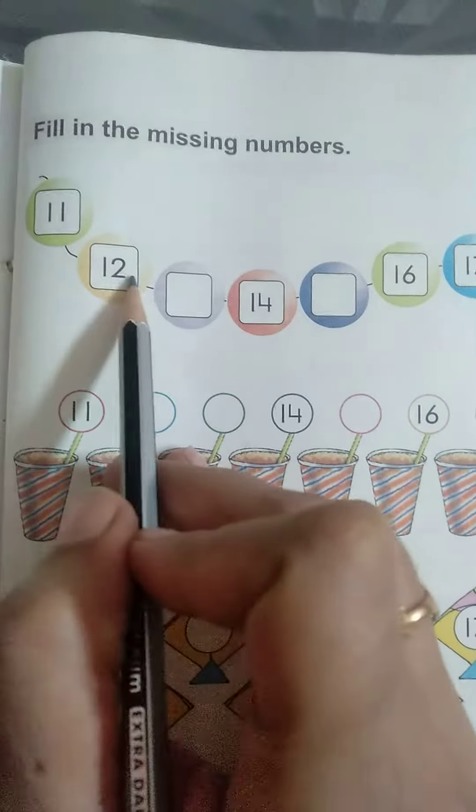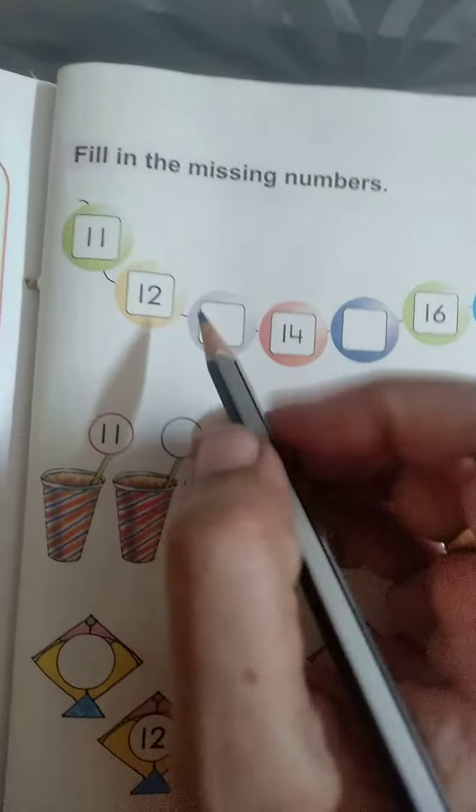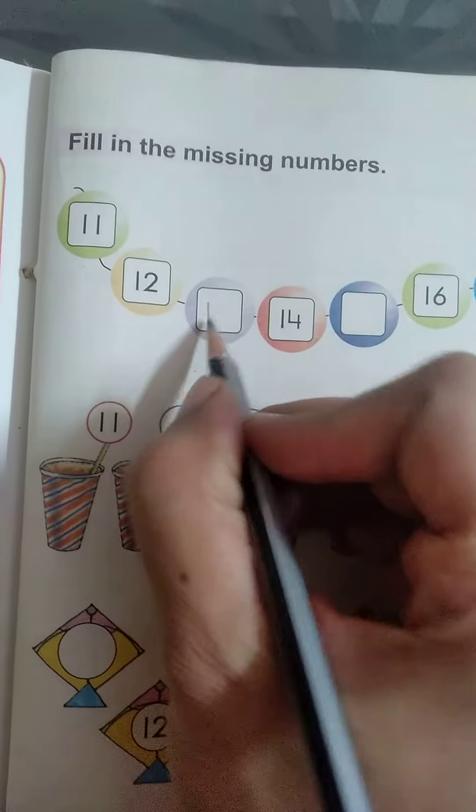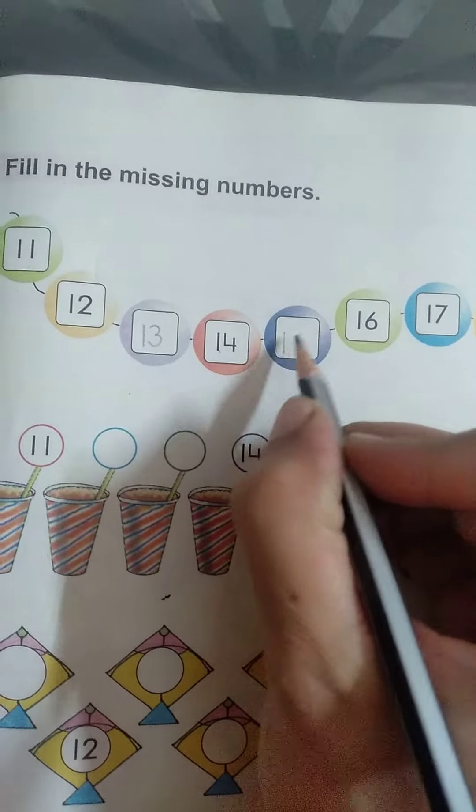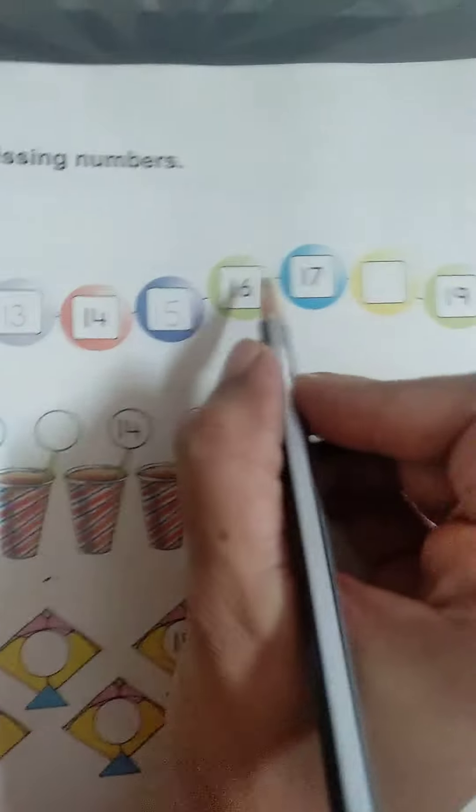What is it? 11, 12. Now which number will come? 13, 14. After 14 which number comes? 15, 16, 17.